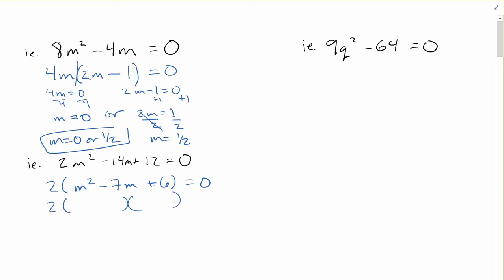Ignore the 2 out front, let's factor the inside. What times to 6 and adds to negative 7? Well, that should be a negative 6 and a negative 1. That 2, you can kind of just ignore it, but if you wanted to know what we're doing with it mathematically, we're dividing by it. What's zero divided by 2? It's just zero again, so you get m minus 6 times m minus 1 still equal to zero. Setting each of these equal to zero, we've got m is equal to 6 or m is equal to 1.